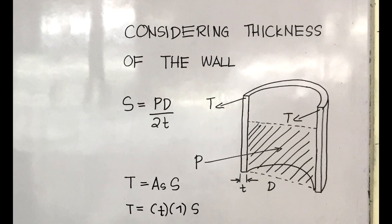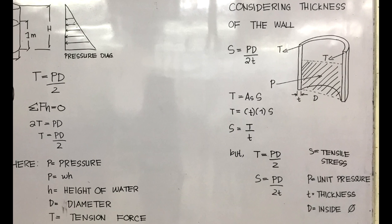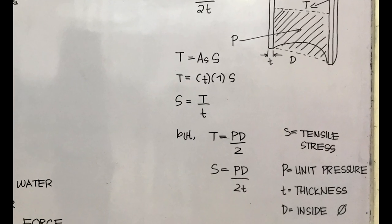Now considering the thickness of the wall, tensile stress equals force over area. Since T equals PD over 2, we get S equals PD over 2t, where S equals tensile stress, P equals unit force, t equals thickness, and D is the inside diameter.